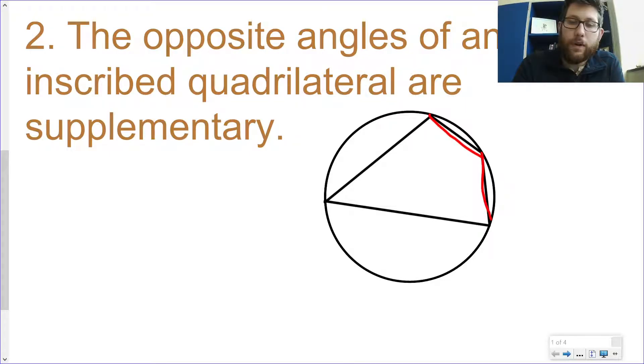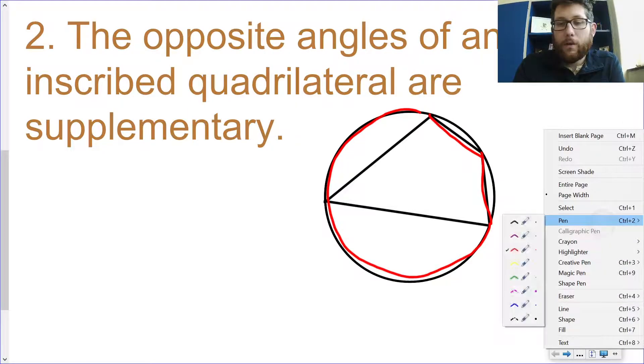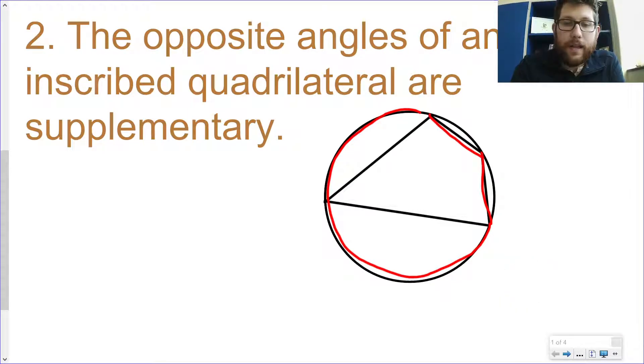So let's take a look at this angle right here. It is equal to half of this red arc, right? Whereas, let's look at this angle over here, the opposite angle in the inscribed quadrilateral. So that angle right there is equal to half of this arc. You okay with that? Is it making sense so far?